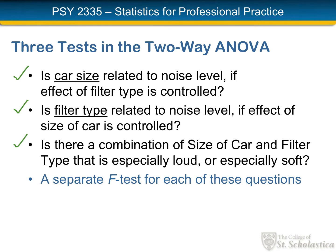In writing up the results we'll use the sandwich method we've used before. We'll make one big sandwich with an introduction at the very beginning and a conclusion at the end, and in the middle all of the descriptive statistics and the results for all three F-tests and their effect sizes. So there's a lot of quantitative middle and only a small amount of narrative bread on either side.